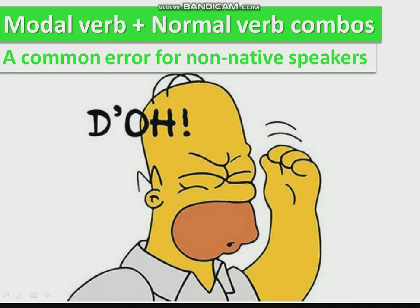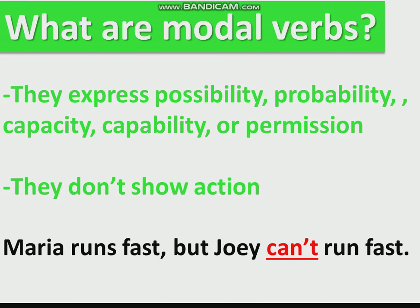Today: very important modal verb and normal verb combinations. This is a common error for non-native speakers, so it's very important to pay attention. This is not in the book — this is my special lesson today. What are modal verbs? Modal verbs express possibility, probability, capacity, capability, or permission. They don't show action. For example, Maria runs fast, but Joey can't run fast. 'Run' is an action verb — it shows action. 'Can't' is a modal verb expressing capability; it is not showing action.